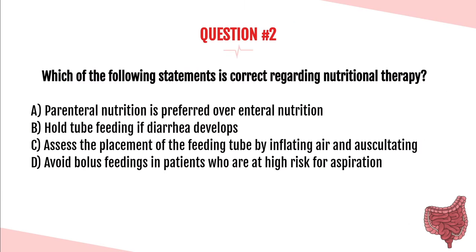Question number two. Which of the following statements is correct regarding nutritional therapy? A. Parenteral nutrition is preferred over enteral nutrition. B. Hold tube feeding if diarrhea develops. C. Assess placement of the feeding tube by inflating air and auscultating. D. Avoid bolus feedings in patients who are at high risk for aspiration.